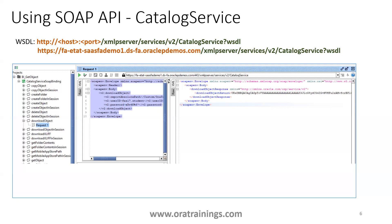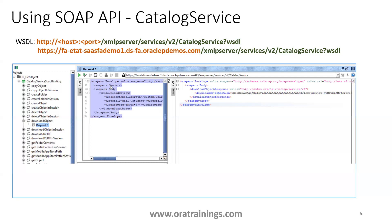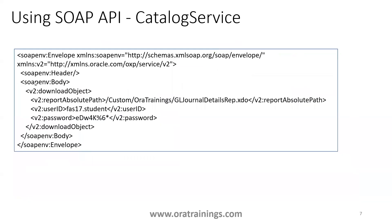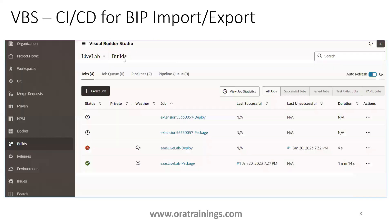The downloadObject method returns the base64-encoded source code of that particular component. From the SOAP API request you provide the report absolute path, user ID, and password. The SOAP API response returns the object definition in base64 format. This encoded response can then be used to upload the component to the target environment.